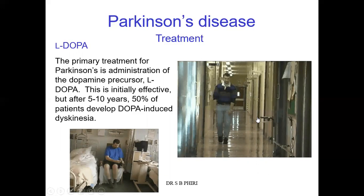L-DOPA stands for L-dihydroxyphenylalanine. This is an amino acid — a precursor amino acid for the dopamine neurotransmitter. Dopamine is also classified in the group of catecholamines. The same drug can be used if somebody is lacking catecholamines, because from L-DOPA you can also produce other catecholamines like norepinephrine or epinephrine.